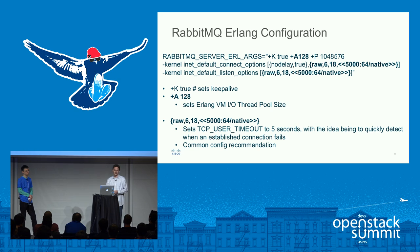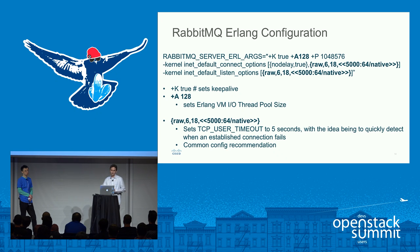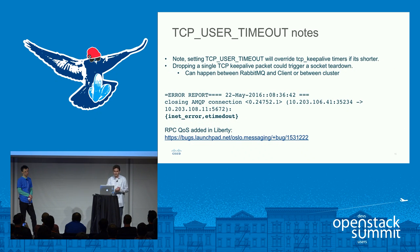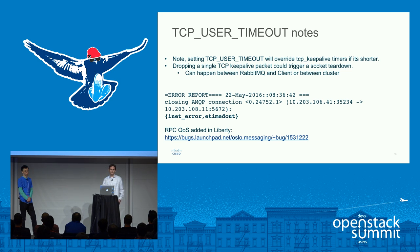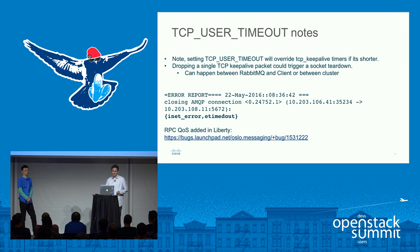Another common configuration recommendation was this TCP user timeout — RAW 618 5000 — which basically sets the TCP user timeout to five seconds, with the idea that we'll quickly detect when an established connection fails. However, this actually causes a lot of issues. If you set the TCP user timeout, it will override any Keep Alive timers if it's shorter. We discovered that if you were to drop a single packet and had this set, it would actually trigger a socket teardown on Rabbit — you'd see an iNet error for eTimedOut. We were seeing this happen between Rabbit and the clients or even between the cluster itself.